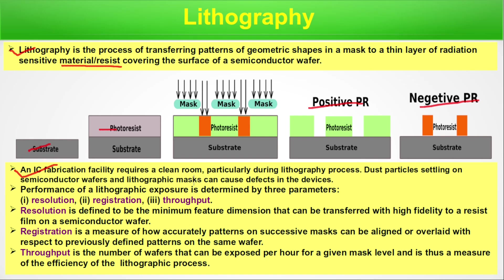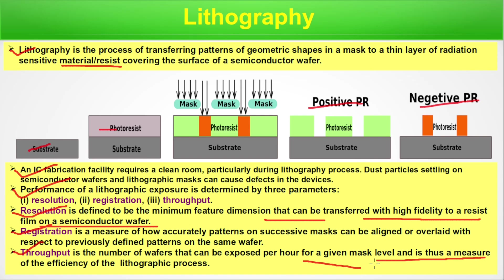Performance of a lithographic exposure is determined by three parameters: resolution, registration, and throughput. Resolution is defined as the minimum feature dimension that can be transferred with high fidelity to a resist film on a semiconductor wafer. Registration is a measure of how accurately patterns on successive masks can be aligned or overlaid with respect to previously defined patterns on the same wafer — in CMOS, multiple masks are overlaid one after another. Throughput is the number of wafers that can be exposed per hour for a given mask level, and is thus a measure of efficiency of the lithography process.